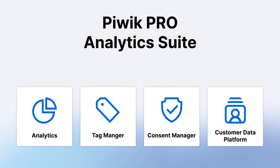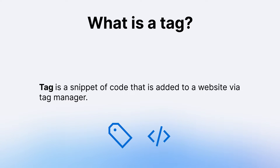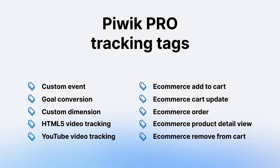I will drop the link to the installation video in the description below. Now let's explain briefly what are the building blocks of the Tag Manager. First, what is a tag? A tag is a snippet of code that is added to a website via Tag Manager. The question is, why would you want to add those snippets of code? Depending on their function, we could be adding PIVIC PRO tracking tags — we can see examples on the screen — and this is why we often talk about Tag Manager in the context of PIVIC PRO web analytics. We can enhance analytics by adding tracking tags such as custom event tag, goal conversion tag, custom dimension tag, or e-commerce tags like e-commerce add to cart tag, e-commerce cart update tag, and so on.